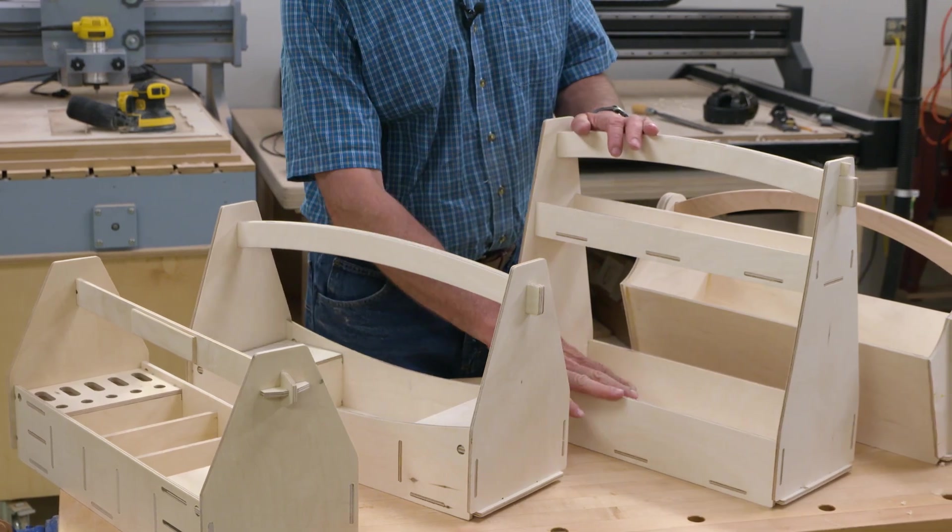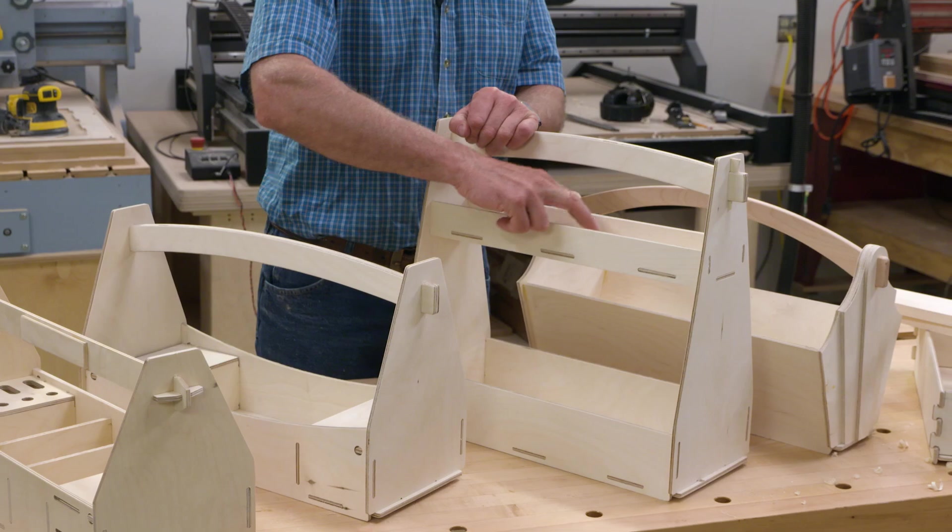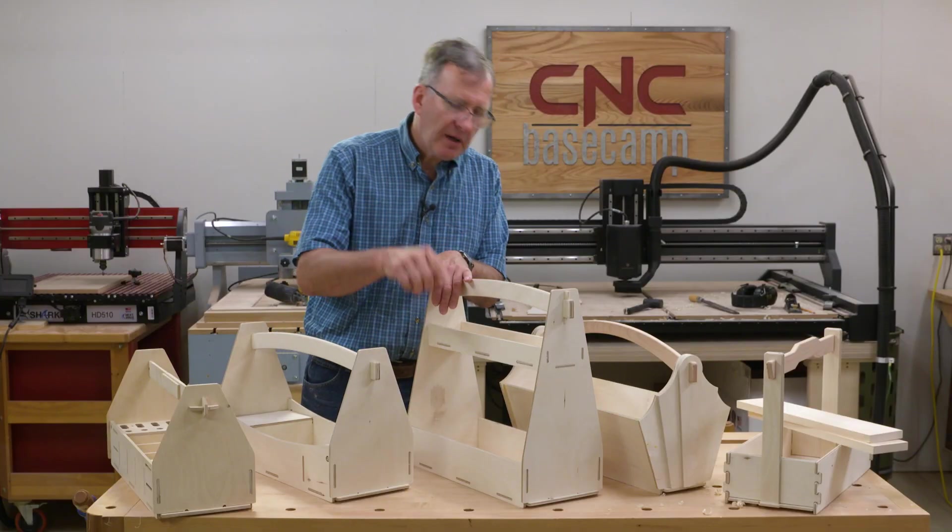Here we have a tote with two different levels. So you've got no excuse but to be able to find your measuring tape, your pencils, and your nail set up here. All the things that would be hopelessly lost in the clutter below.